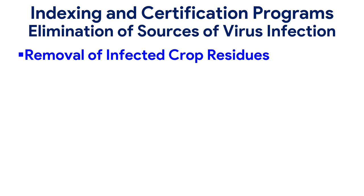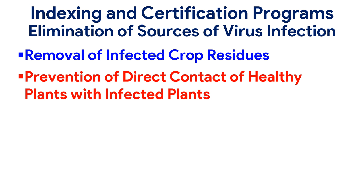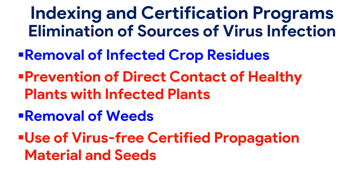Indexing and certification programs involve removal of infected crop residues or remnants of virus-infected plants as they act as a source of infection, prevention of direct contact of healthy plants with infected plants or with contaminated hands, removal of perennial weeds as they act as sources of viral diseases in legumes and cucurbits, and use of virus-free certified propagation materials and seeds to prevent seed-borne diseases.